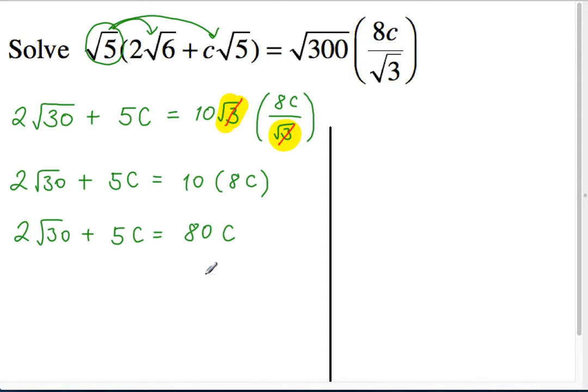So now you have 2 root 30 plus 5c equals 80c. And our goal, as we stated at the beginning, is to just isolate c on its own. And it's c's on both sides. So what's next? I have to move this 5c to the other side. So I'm going to subtract both sides by 5c.